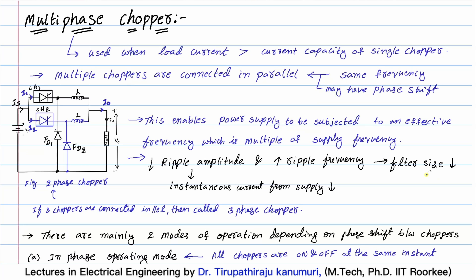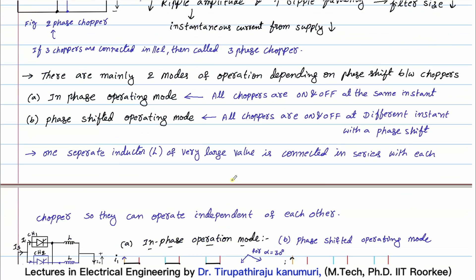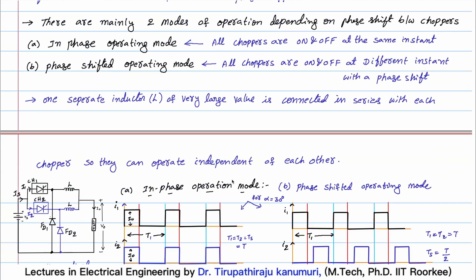We are also going to see that in one particular mode, the instantaneous current taken from the supply — also called the ripple amplitude — will also decrease when going for multi-phase choppers. Before proceeding to the waveforms, based on how the parallelly operating choppers are fired and at what instant they are triggered, there are basically two modes of operation.